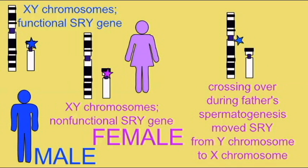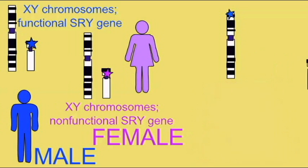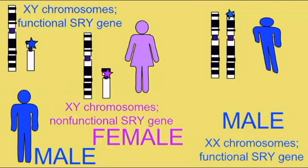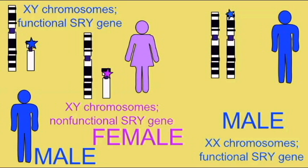If SRY is moved to an X chromosome through crossing over — this rarely occurs, but when it does — this SRY gene may cause an XX individual to develop as a male. So SRY can also cause XX sex reversal when XX female cells receive the instructions to activate male-specific genes. Most, but not absolutely all, cases of XX sex reversal are due to the presence of the SRY gene in an XX cell.